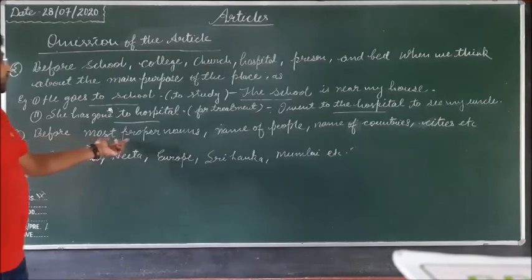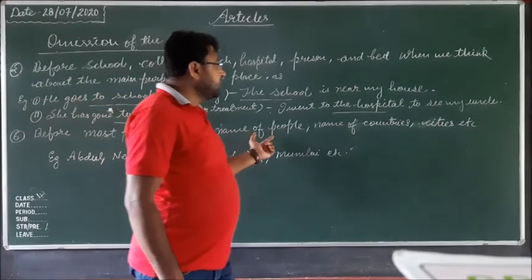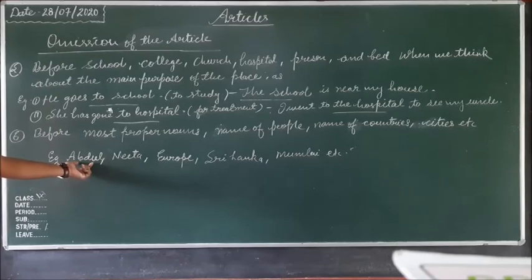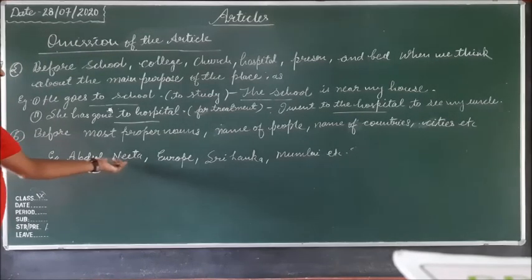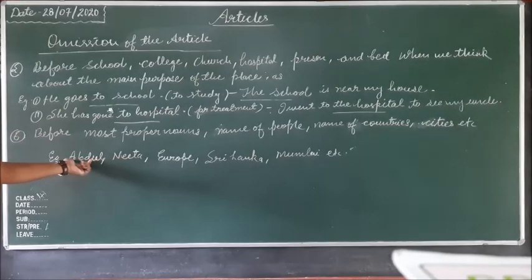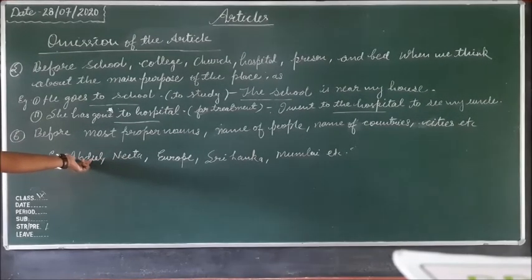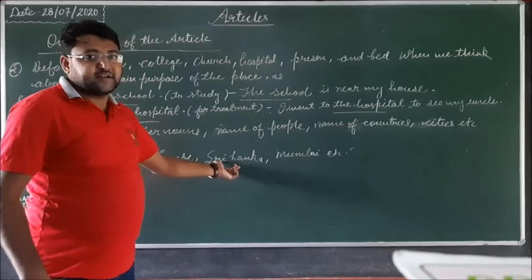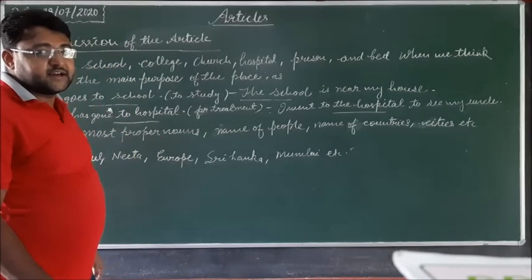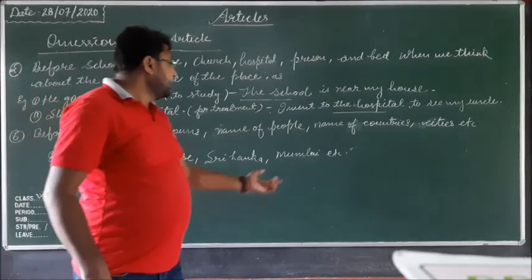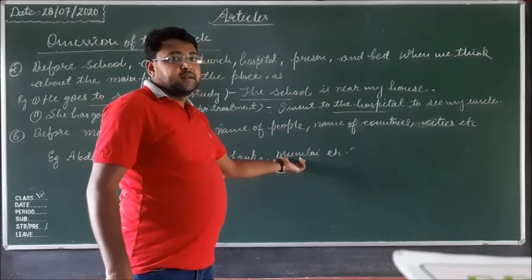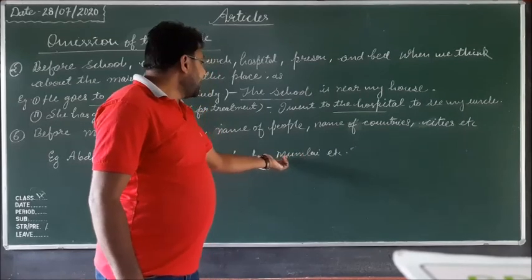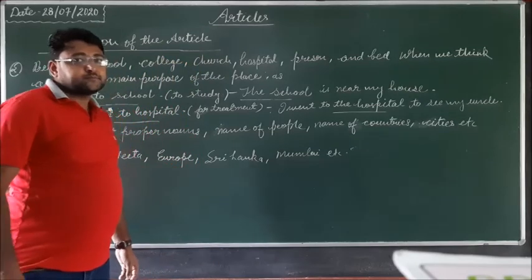The sixth case of omission is before most proper nouns — names of people, names of countries, and names of cities. For example, before names like Abdul or Ninta, we never use an article because these are proper nouns. Before names of countries like Europe or Syria, no article is used. Before names of cities like Mumbai, no article is used either, because all these are proper nouns.